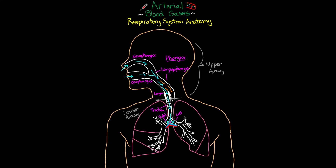The two lungs are not the same size and shape. The right lung has three lobes — upper, middle, and lower — while the left lung has only two — upper and lower. The left lung also has a notch on the lower inside portion called the cardiac notch, because the heart projects into that space.